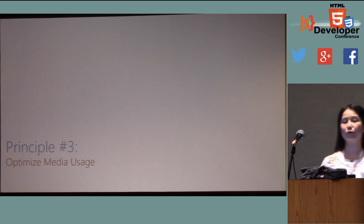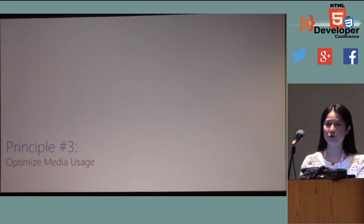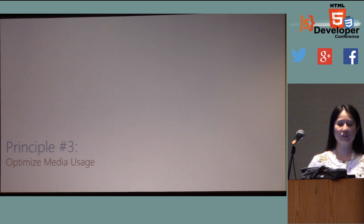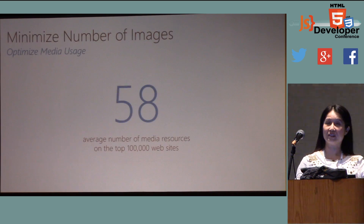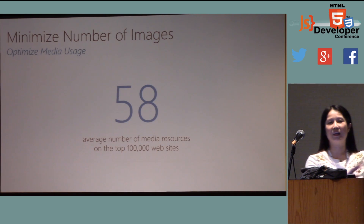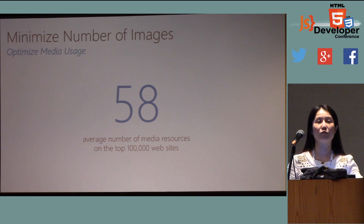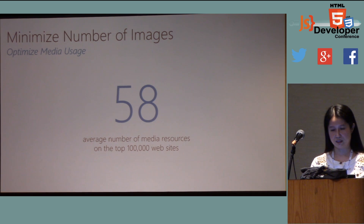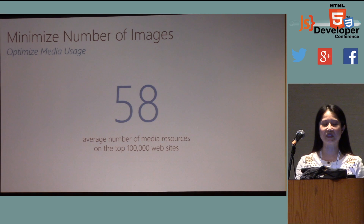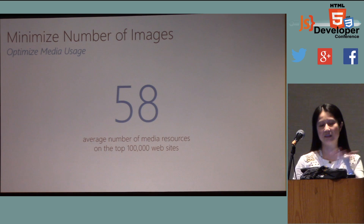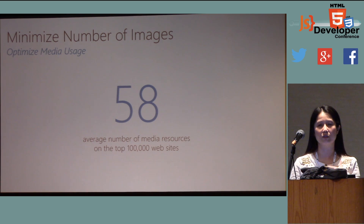We just briefly went through the first two principles: respond quickly to network requests, and look at your download bytes and think about caching. Principle three: optimize your media usage, focusing on images. From our statistics on the top 100,000 websites, the average media resource count is 58. Images are the dominant resource both in count and download size, so we need to work with images.